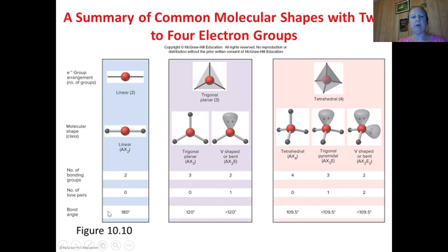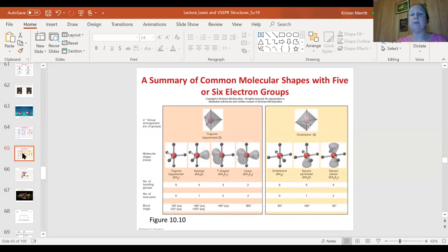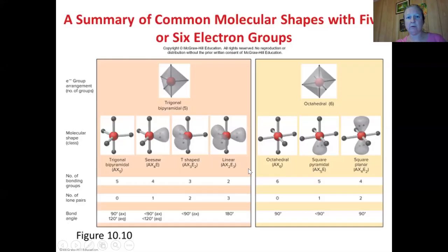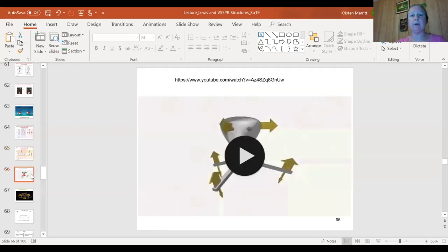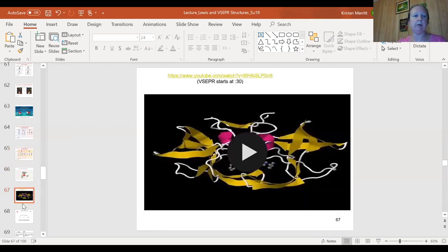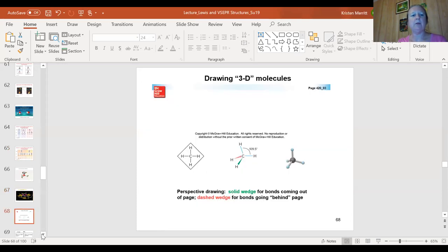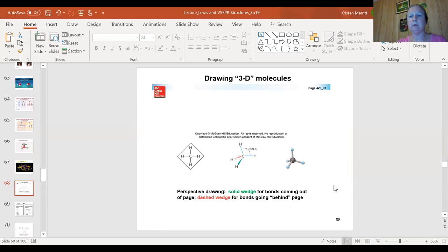Here are the second and third videos I recommend — they are in the lecture slides. These go into drawing as well. Your dotted line doesn't have to be wedged, but make sure your front wedge is angled: skinny end toward the molecule, fat end coming out at you. Make sure your lines are hash marks, not dotted lines, and that the angle is wider than 90 degrees.